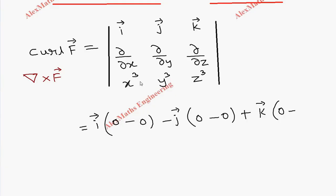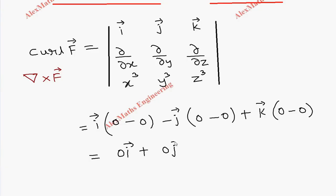And partial derivative of x cube with respect to y is 0. So totally we get 0 vector, which is 0i vector plus 0j vector plus 0k vector, which is totally a 0 vector. Note that 0 does not have a plus or minus sign, so we got curl F vector equals 0 vector.